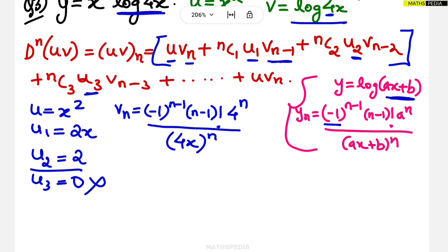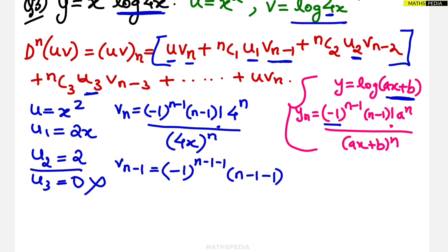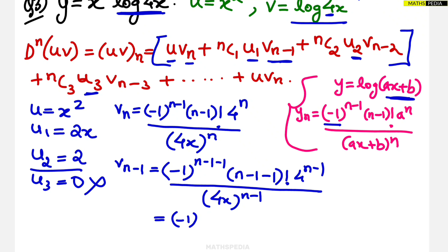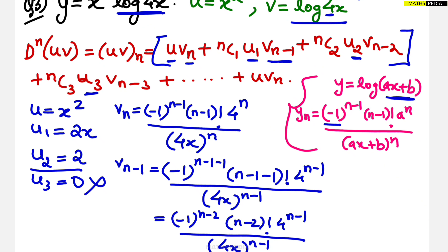For vn-1, substitute n-1 in place of n in the vn formula. This gives: (-1)^(n-2) × (n-2)! × 4^(n-1) divided by (4x)^(n-1). That is vn-1.